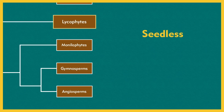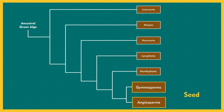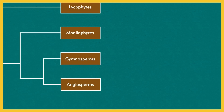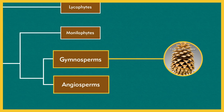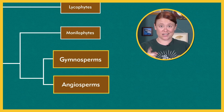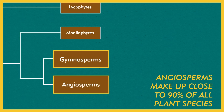Seedless vascular plants include lycophytes, which include club mosses, and monilophytes, which include ferns. Our last and largest group of plant species are vascular and have seeds. The last big split in the plant phylogeny has to do with the type of seed – specifically whether or not the seed has chambers during development. The two groups of seed plants are gymnosperms and angiosperms. Gymnosperms have seeds that are not enclosed in chambers. The prefix 'gymnos' means naked, so – naked sperm it is. Angiosperms have seeds that develop inside of chambers, and these chambers typically come from flowers. So angiosperms are also referred to as flowering plants, and they make up close to 90% of all plant species.